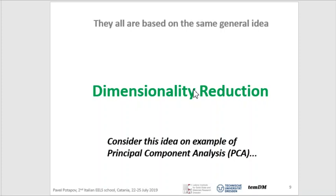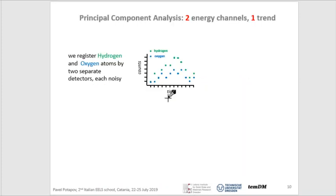So what is this idea of dimensionality reduction? Consider this as an example of principal component analysis, PCA. Imagine some gas chamber where an unknown gas is injected, and we have two detectors: one measuring hydrogen atoms and another measuring oxygen atoms, and both registrations are quite dirty. As a result, our measurements look rather noisy. Let's try to improve that by plotting a joint distribution of both detectors.